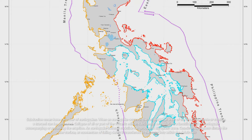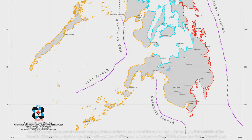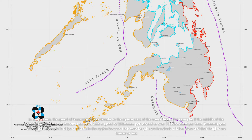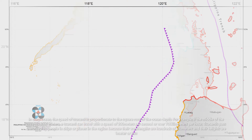An earthquake-induced rockslide can produce a big splash wave. Cosmic body impacts disturb the water surface as the momentum of falling debris is transferred to the water into which the debris falls. In deep ocean, the speed of a tsunami is proportionate to the square root of the ocean depth.